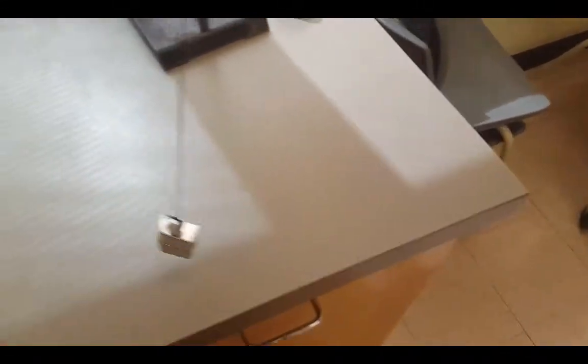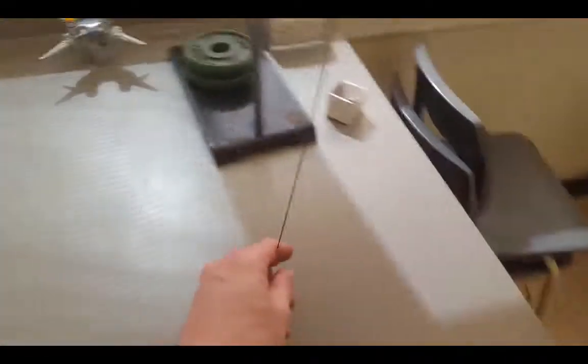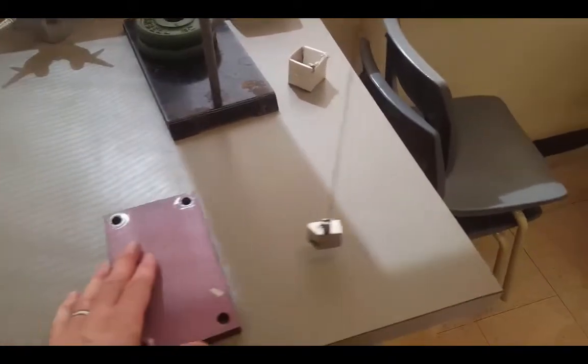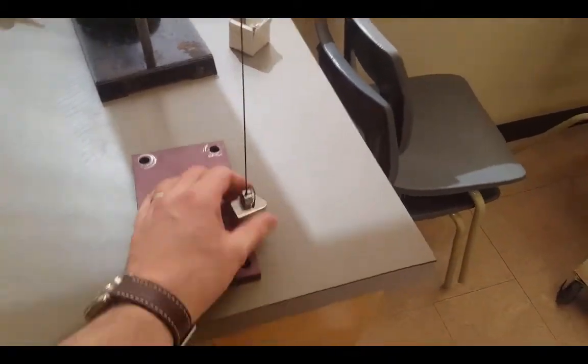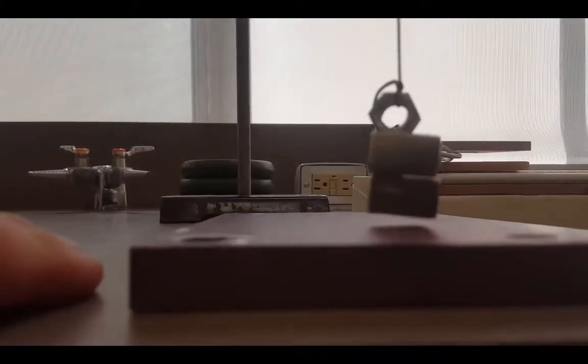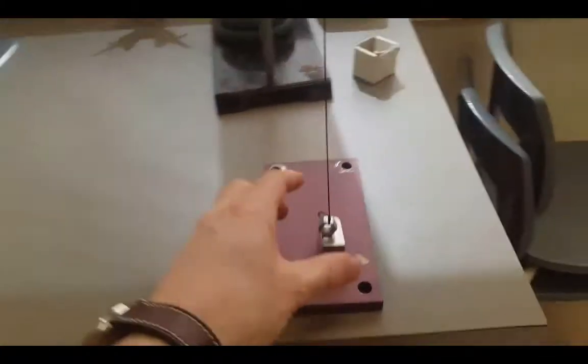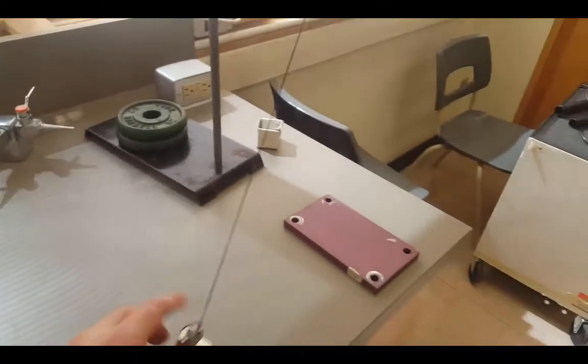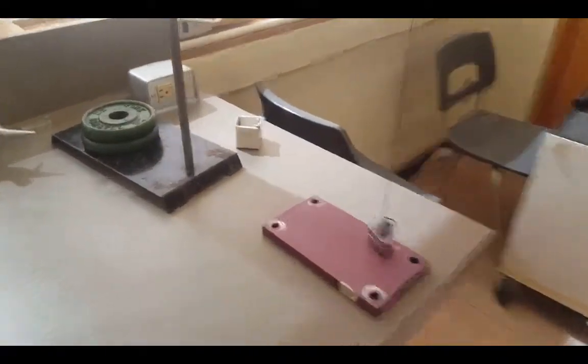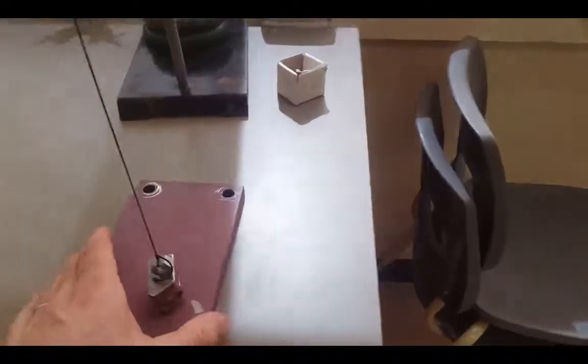So if I move the piece of aluminum out of the way, get the pendulum to swing back and forth, it will swing for a very long time. But if we take the aluminum plate and put it underneath, you can see that it doesn't actually touch the plate. There's a little bit of an airspace. Now we let the pendulum go and it breaks almost instantly.